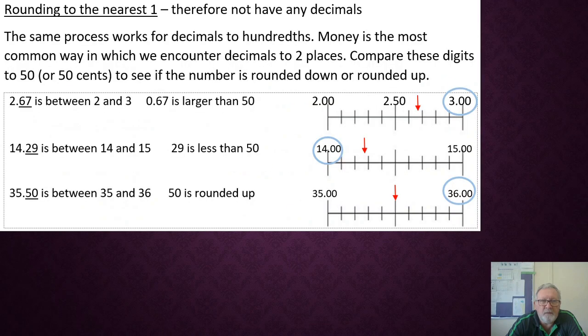Alright, let's move on. This time, we're still rounding to the nearest one, but instead of it just being tenths, we're looking at two decimal place values. So tenths and hundredths. Money is the most common place that we encounter decimals to two places, and so it's often easy to think of these in terms of money. And if you are thinking of it in terms of money, you're comparing it to that idea of 50 or 50 cents to see if your number should be rounded up or rounded down.